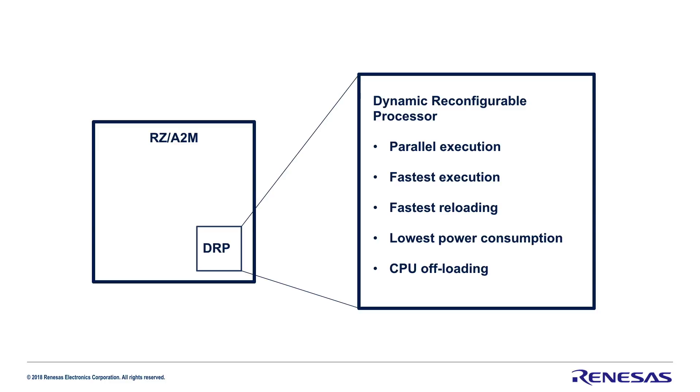DRP can be reloaded to new functions every cycle and has very low power consumption. In addition, it offloads the CPU.